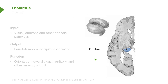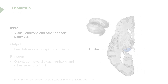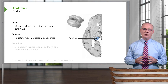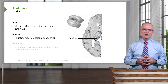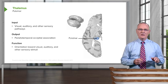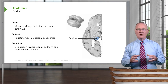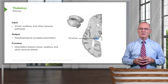Next is the pulvinar nucleus, shown here in a light blue color. It receives input from the visual pathway, auditory pathway, and other sensory pathways that contribute input into this nucleus. Output is going to be to the parietal-temporal-occipital association area, and this will allow us to orient ourselves toward visual, auditory, and other sensory stimuli.